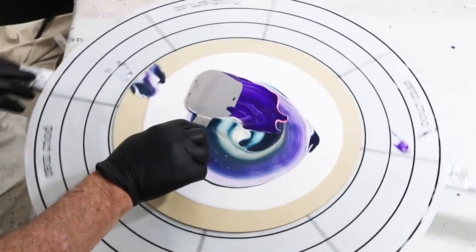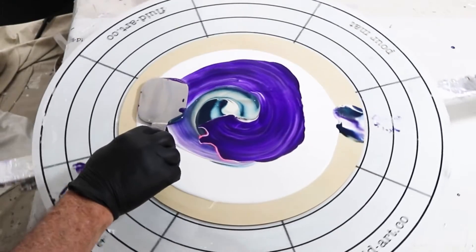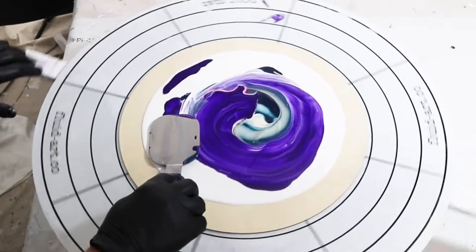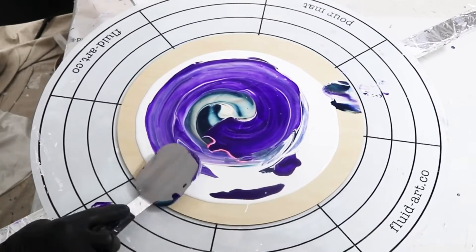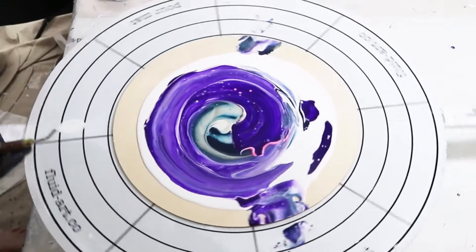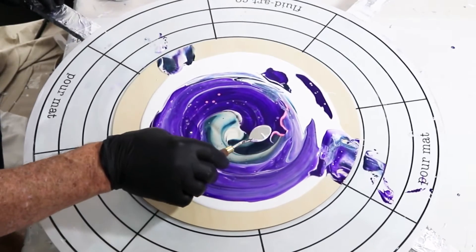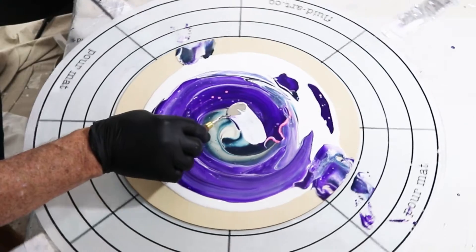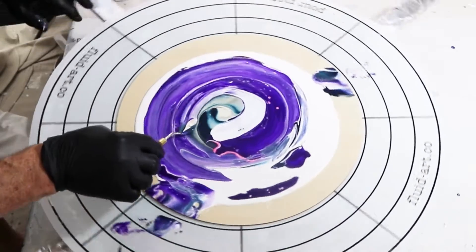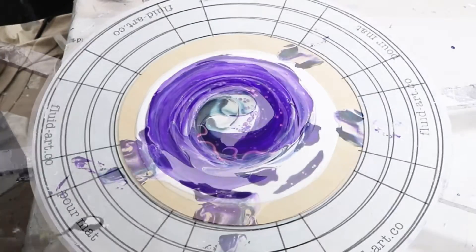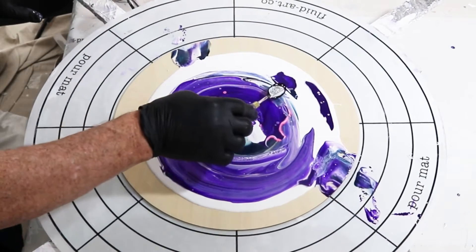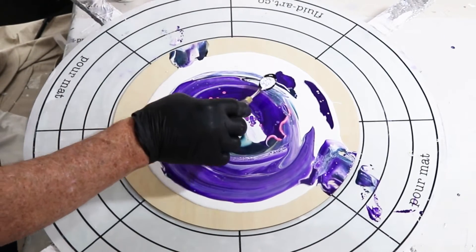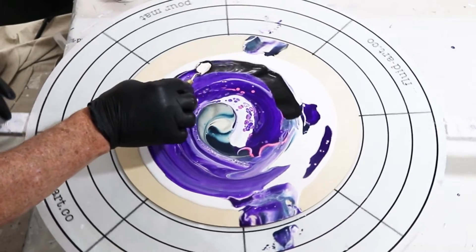If you missed anything, don't worry—it's in the description below. I picked up my smaller swiping tool and I'm swiping with titanium white cell activator to get more cells going. I'm going to do the same thing on this side with the dioxazine purple.